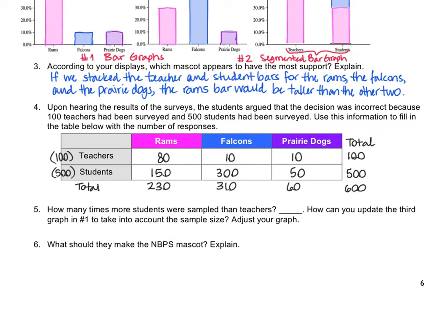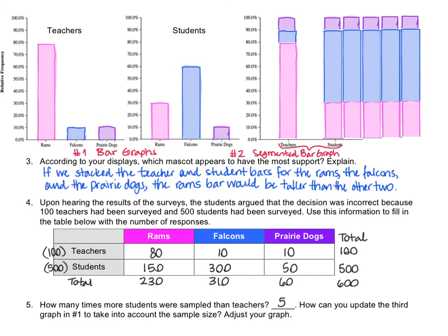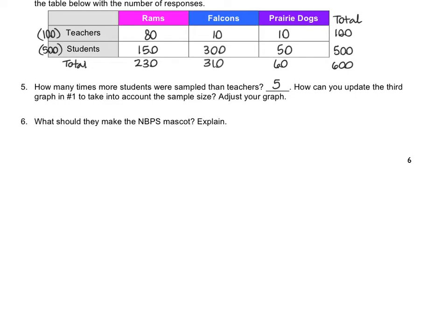How many times more students were sampled than teachers? 500 students, 100 teachers — five times as many students. How can you update the third graph to take into account the sample size? What we're going to do is make a new graph, using the proportionality from the segmented bar graph but showing the greater number of students by stacking the segmented bar graph horizontally. This horizontal stacking creates what we call a mosaic plot, and this allows us to see the relative quantities of teachers versus students who voted for the mascots. We add four more student bars so that there are five student bars and only one teacher bar, indicating five times as many students voted.